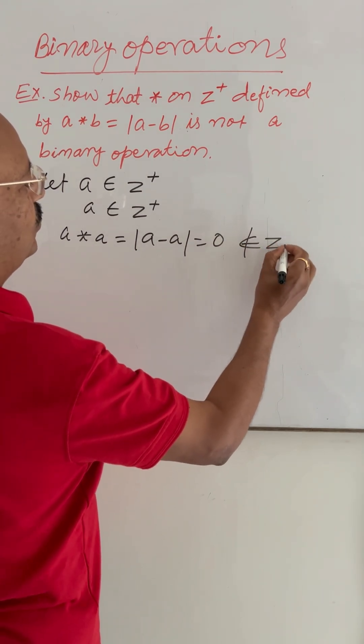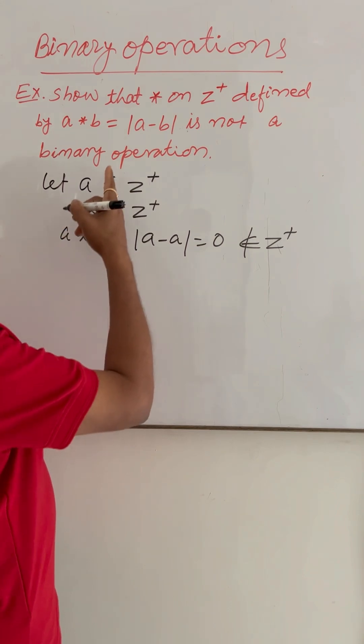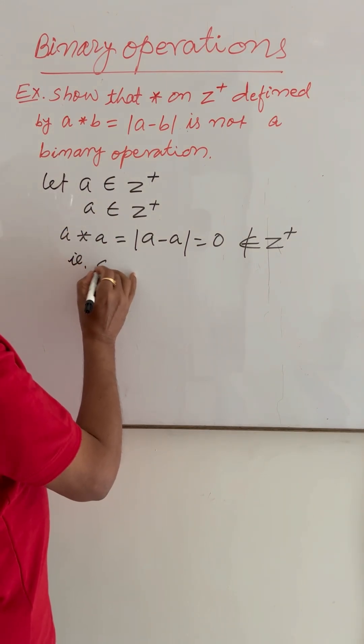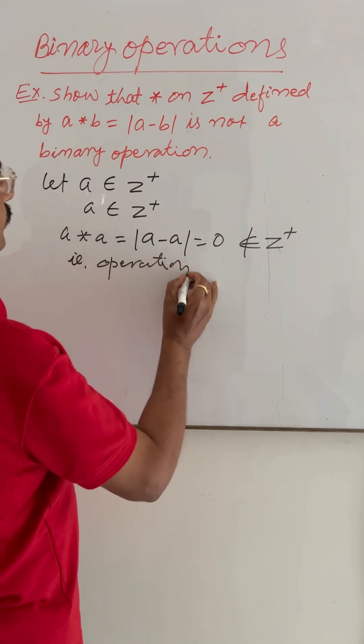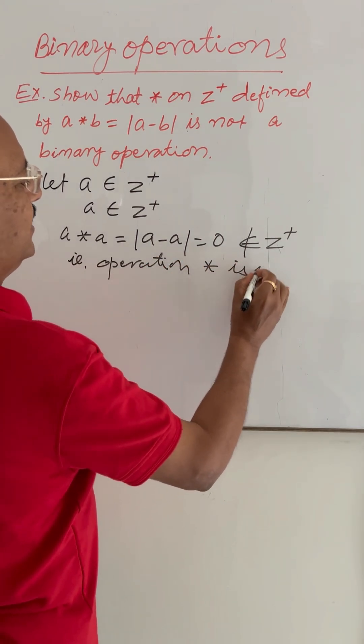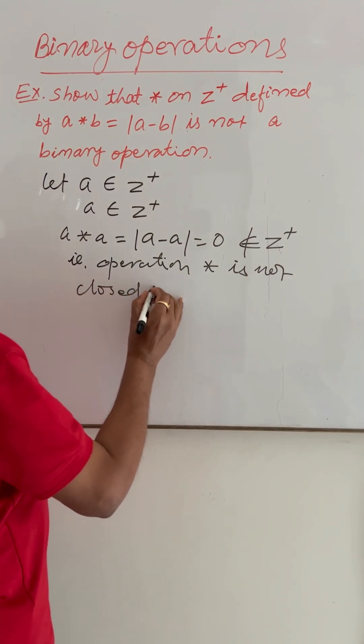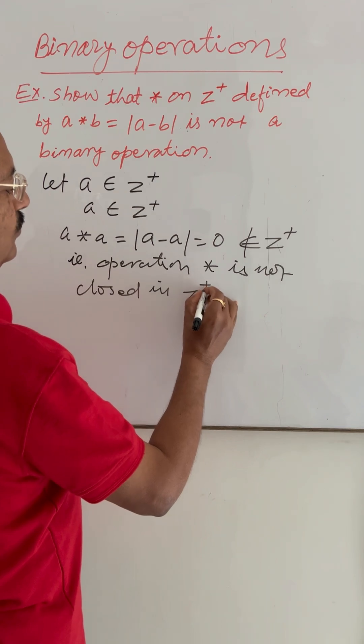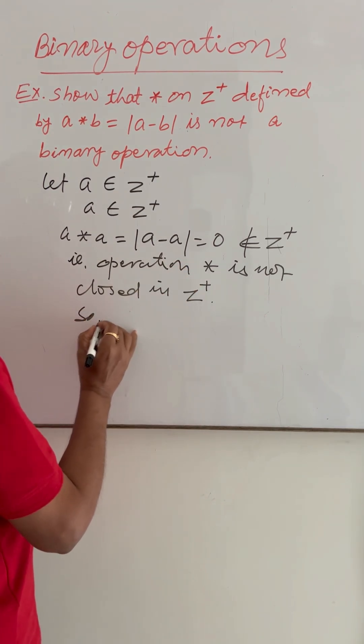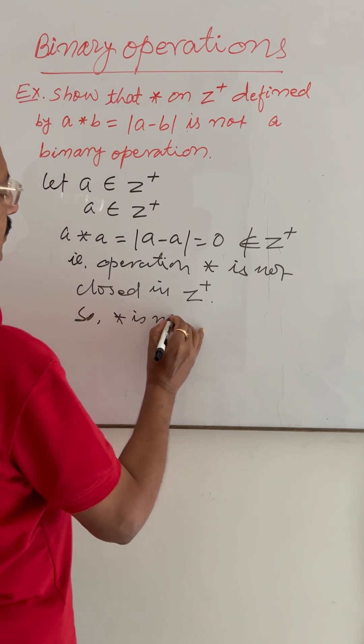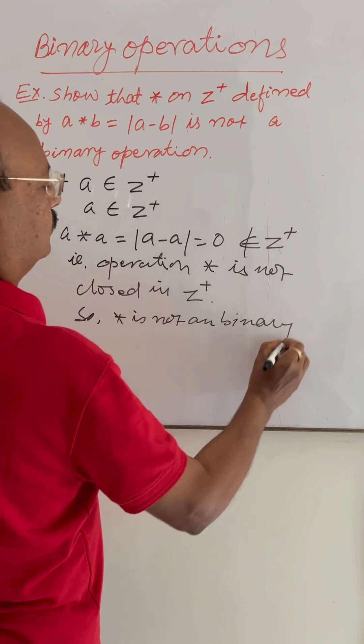This does not belong to Z plus. It means this operation is not closed. That is, this given operation is not closed in the set of positive integers Z plus. So this operation is not a binary operation.